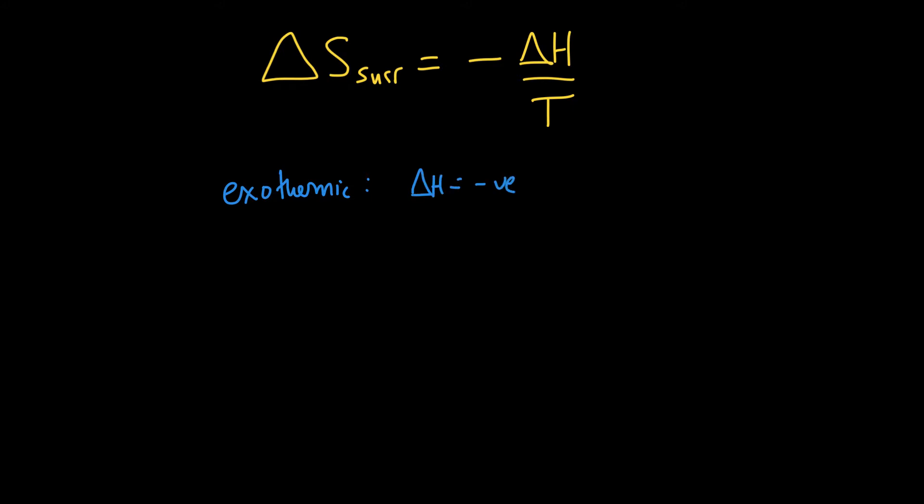We can look at it from the surroundings point of view and say if it's exothermic, then the surroundings is going to have an entropy change. That is minus delta H. It's going to be minus a minus number over the temperature. And of course, the temperature, the absolute temperature, is always positive. So the surroundings will always increase in entropy.